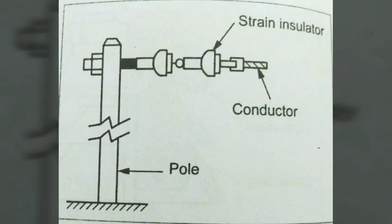Next, strain insulators. These insulators are used to take the tension of the conductors at termination of the line and at angle positions where there is a change in direction of the line. For light low voltage lines, a shackle insulator is suitable, but for higher voltages, a string of suspension insulators is necessary.